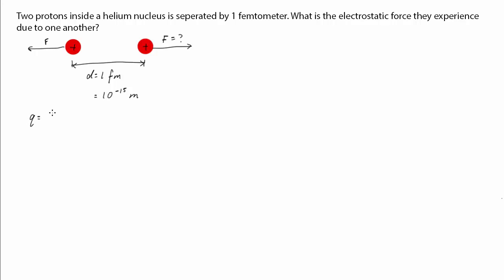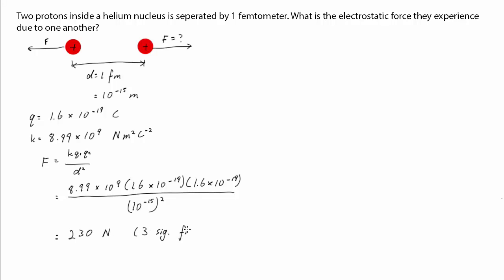The charge a proton has is 1.6 times 10 to the negative 19 coulombs. Coulomb's constant is 8.99 times 10 to the 9 newtons meter squared per coulomb squared. So applying Coulomb's law, we get that the force the proton experiences is 230 newtons.